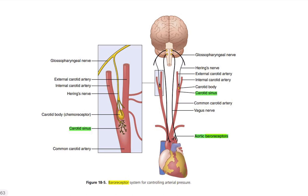In this picture, we can see the carotid sinus. The common carotid artery bifurcates into the internal carotid artery and the external carotid artery, and at this bifurcating point is the carotid sinus. So the carotid sinus is located at the bifurcation of the common carotid artery.